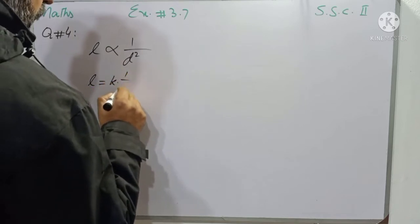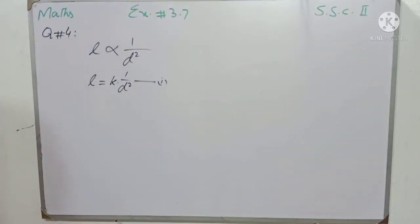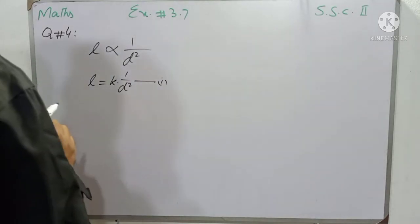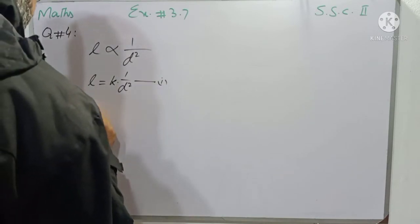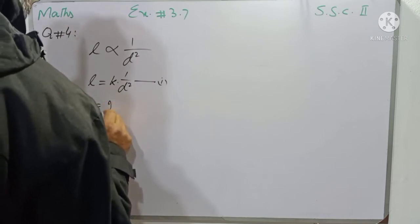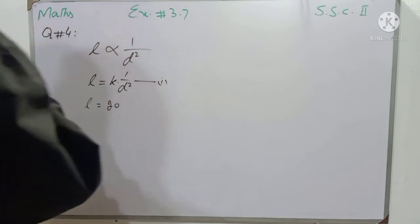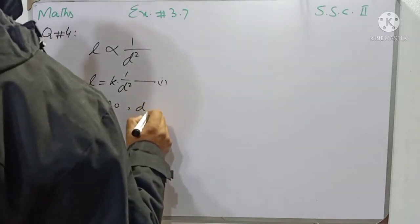The equation is L equals K times 1 over D squared. The given information is that if the intensity is equal to 20 candle power, and the distance given is equal to 12 feet.